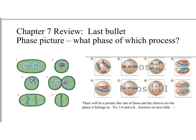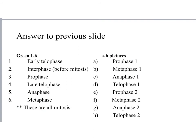On the exam, there will be a picture of one of the phases of either mitosis or meiosis, and you need to identify which phase it is in multiple choice. Two practice pictures are provided — one for mitosis, one for meiosis. The mitosis answers (1–6) are: early telophase, interphase, prophase, late telophase, anaphase, metaphase. The meiosis answers (A–H) are in order: prophase 1, metaphase 1, anaphase 1, telophase 1, prophase 2, metaphase 2, anaphase 2, telophase 2.